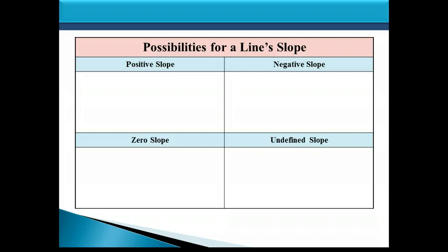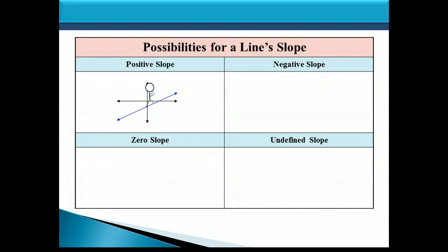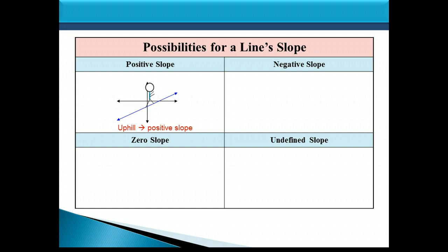Let's look at four different kinds of slope a line could have. First, a line could have positive slope, like this line here. One way to recognize positive slope is to imagine a little man standing on the left side of the line who wants to walk along the line from left to right. As he moves from left to right along the line, he's walking uphill. So if the man walking from left to right is going uphill, that means the line has a positive slope.